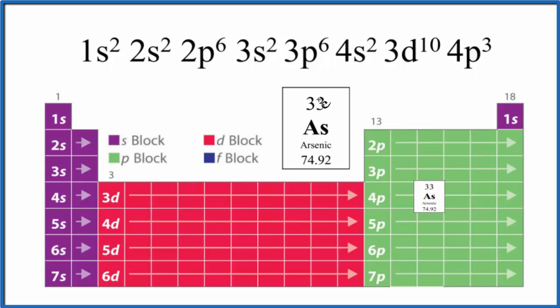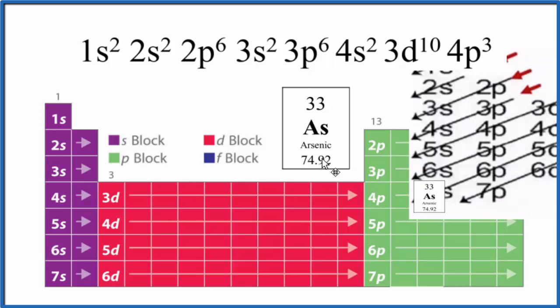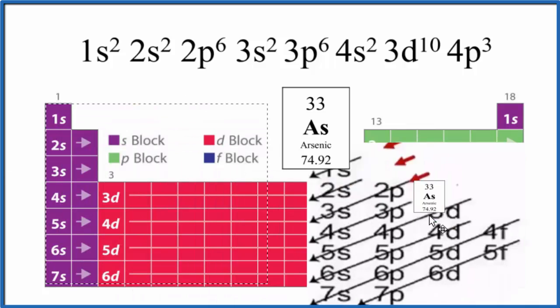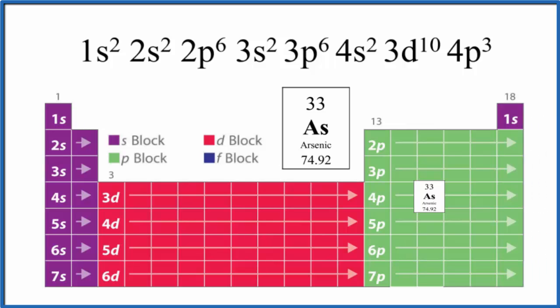You can use the diagonal rule to write the electron configuration. You have a diagram like this and you follow the arrows. There's a link in the description how to do that, but it's probably better just to look at the periodic table broken up into blocks. We have our s block, d block, and p block. The f block would be down here. Arsenic's right here on the periodic table, so we'll just follow along and write the electron configuration.